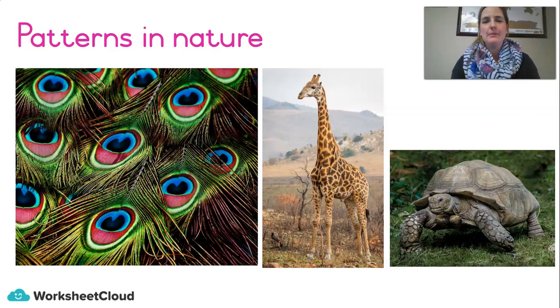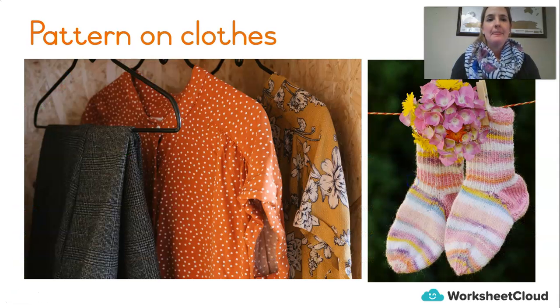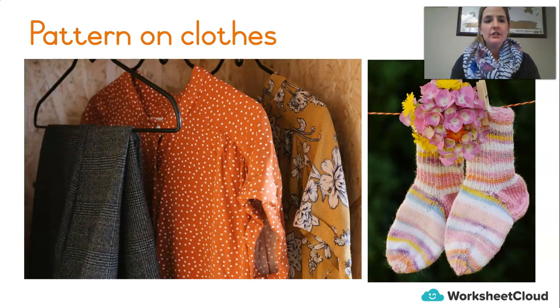Last time we talked about patterns in nature. That means we can see some irregular patterns, patterns that aren't exactly the same, like this giraffe has some beautiful colors on her skin, these peacock feathers, or a tortoise. If you look outside, you'll see some patterns in nature. We also talked about patterns on clothes. You might have patterns on your clothes right now. Are you wearing polka dots or stripes? Maybe you've got an interesting flower pattern.